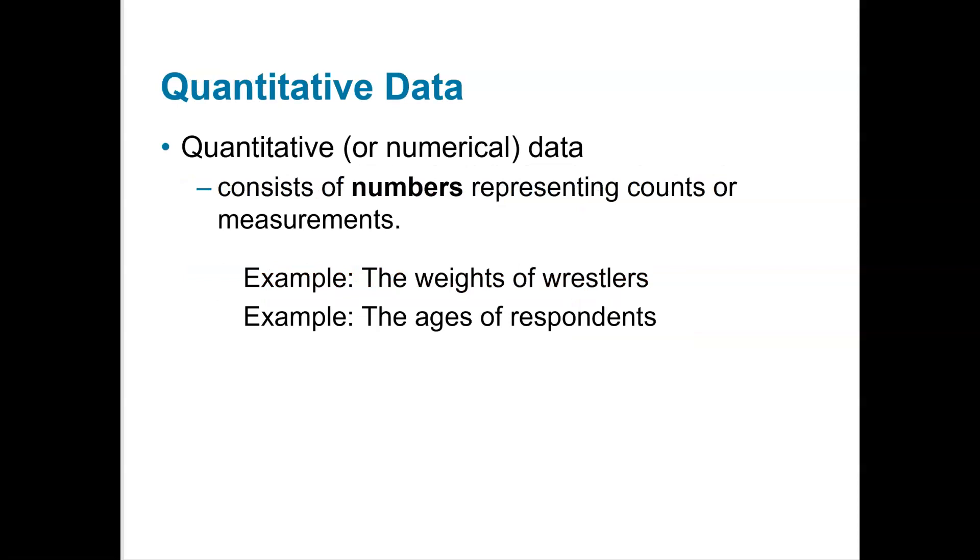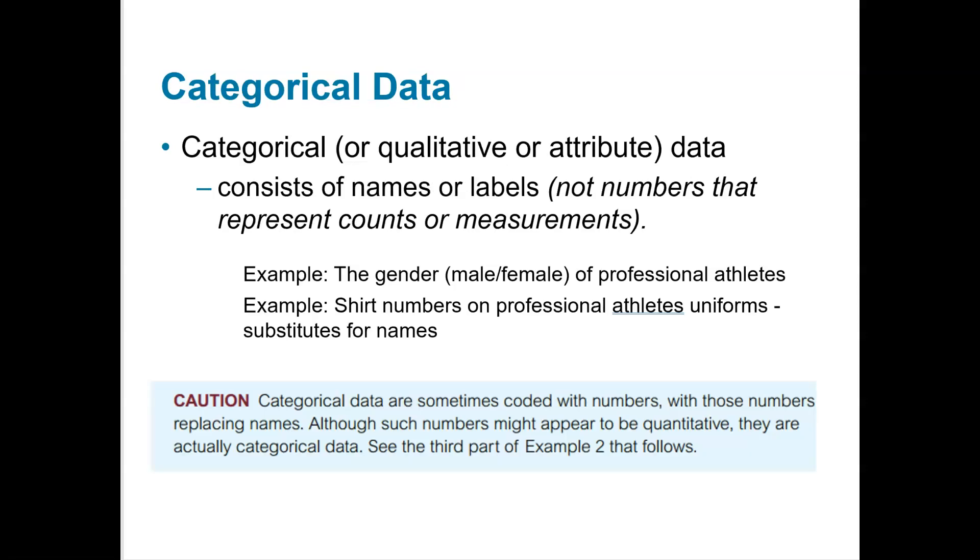So quantitative data or numerical data consists of numbers that can be counted or measured. So the weights of wrestlers, the ages of respondents. Categorical or qualitative data consists of names or labels. Now sometimes you do have numbers, but the numbers can't really be counted or measured and they're more about names. So for example like a shirt number or gender. These are qualitative data.